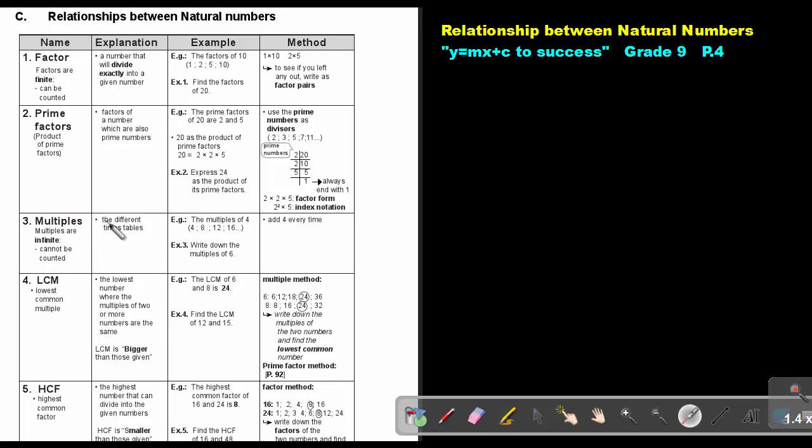Multiples. The different timetables. So the multiples of 4 will be 4. I add 4 every time. That's 8 plus 4, 12, plus 4, 16, plus 4, 20.